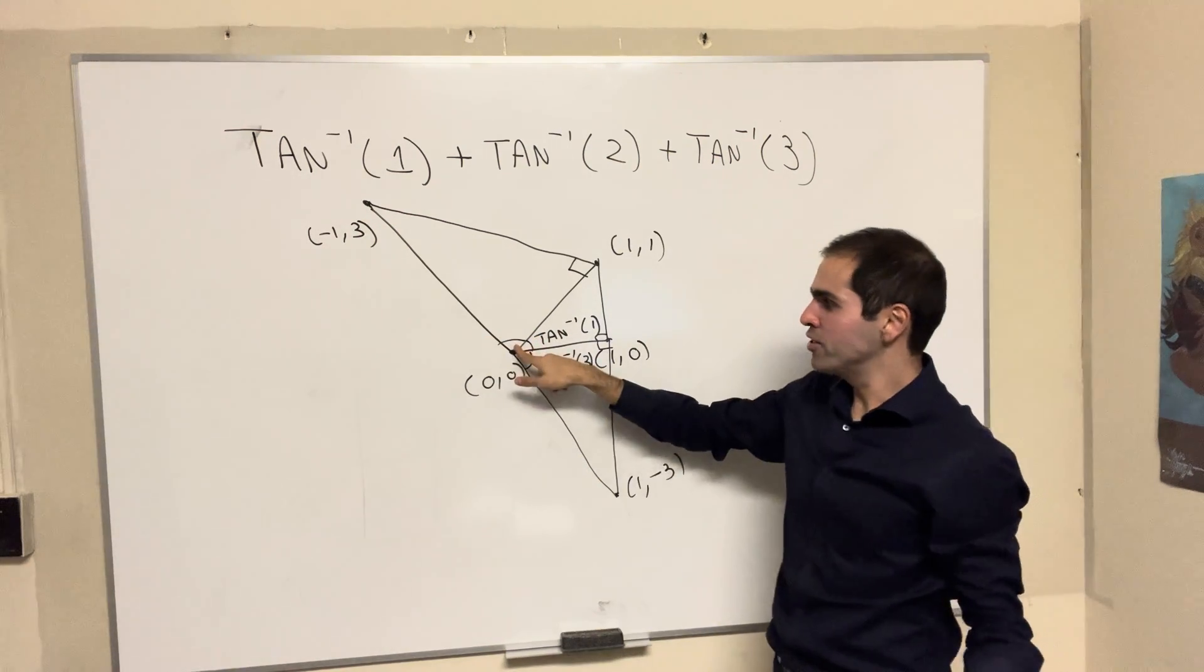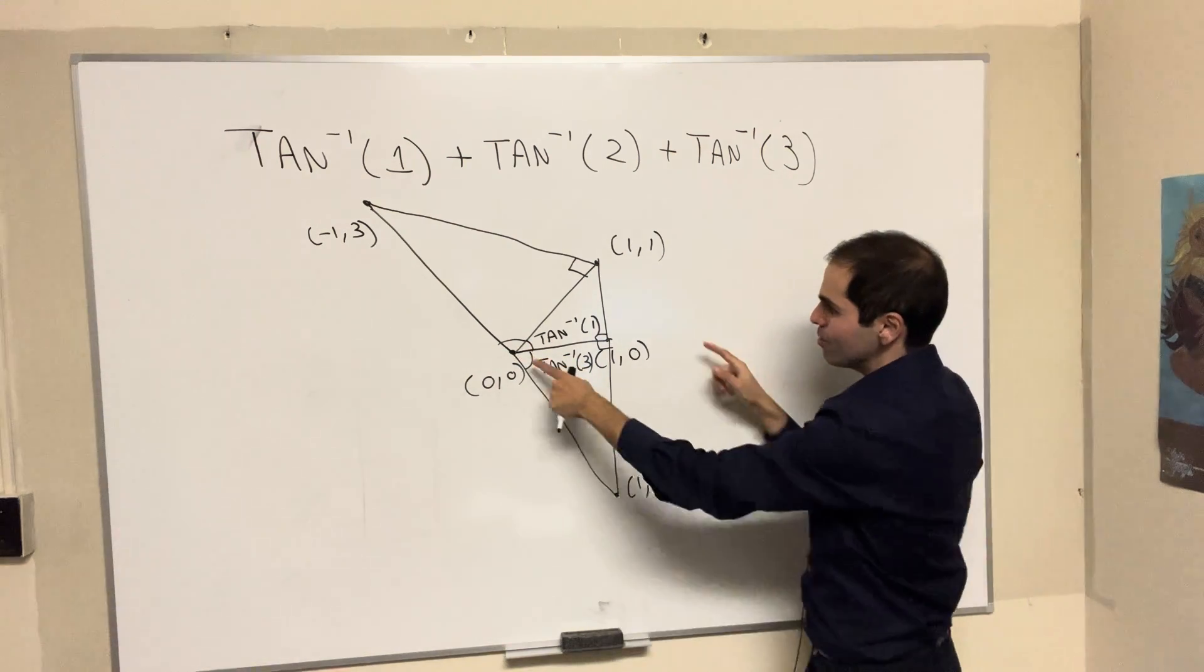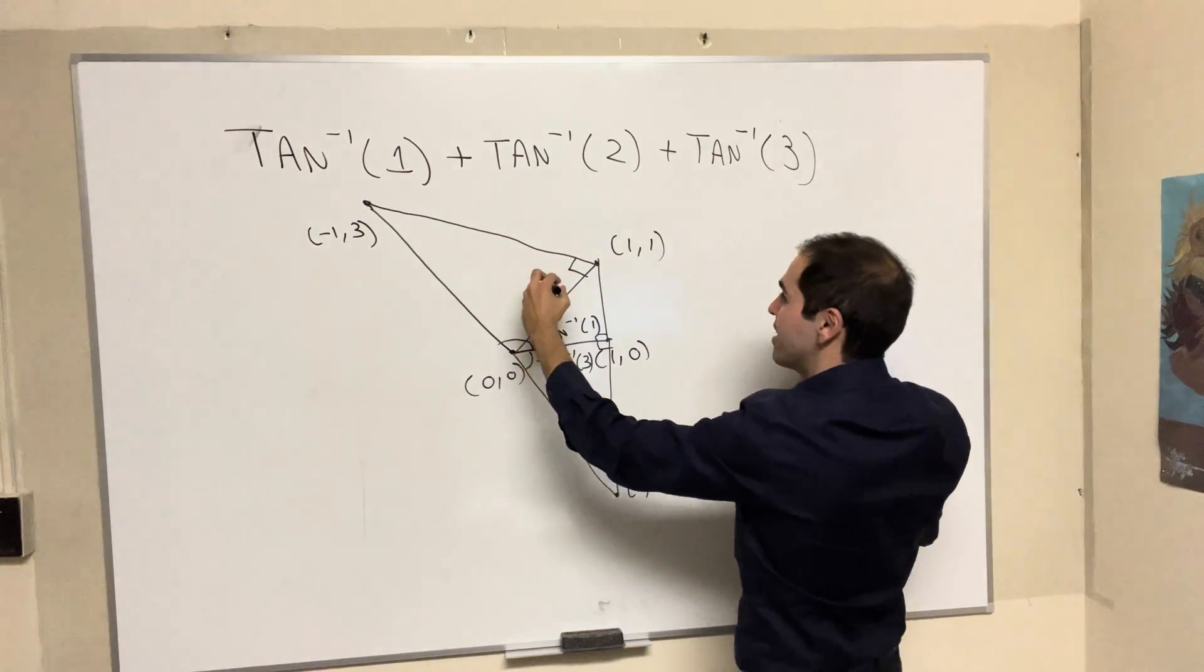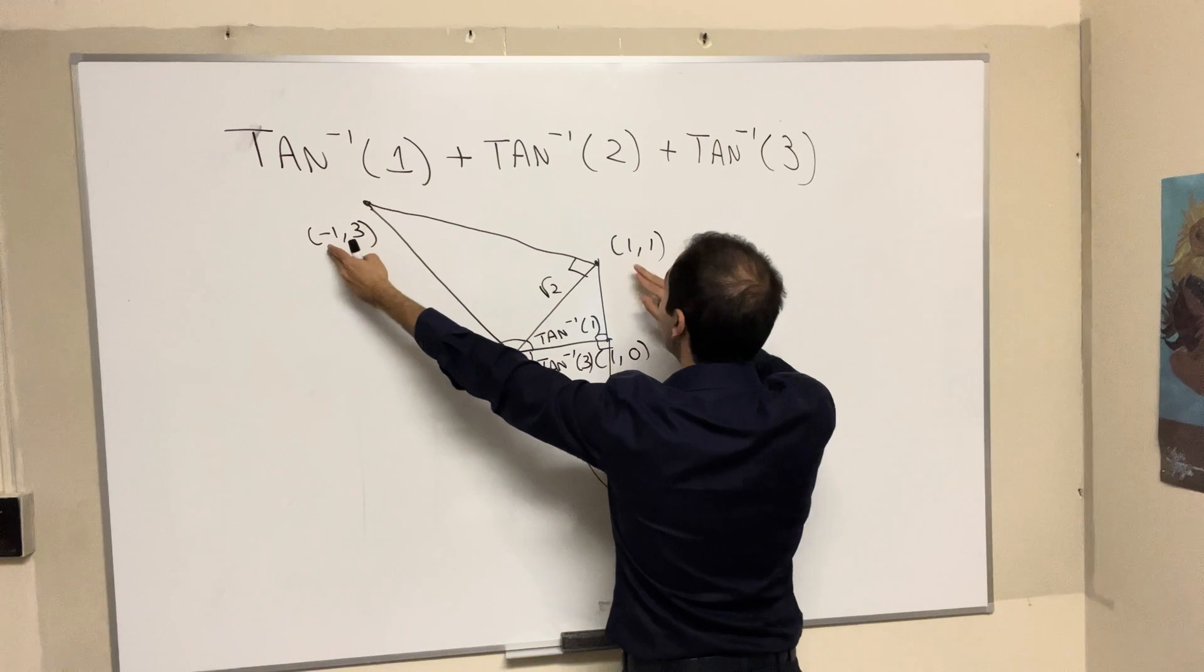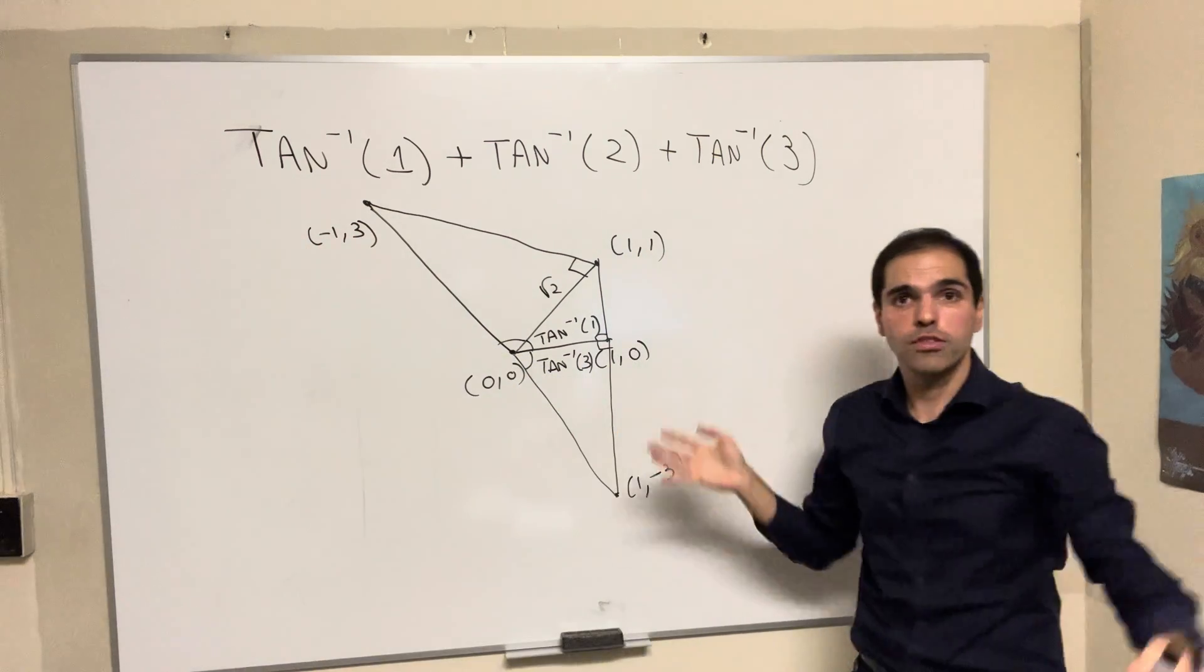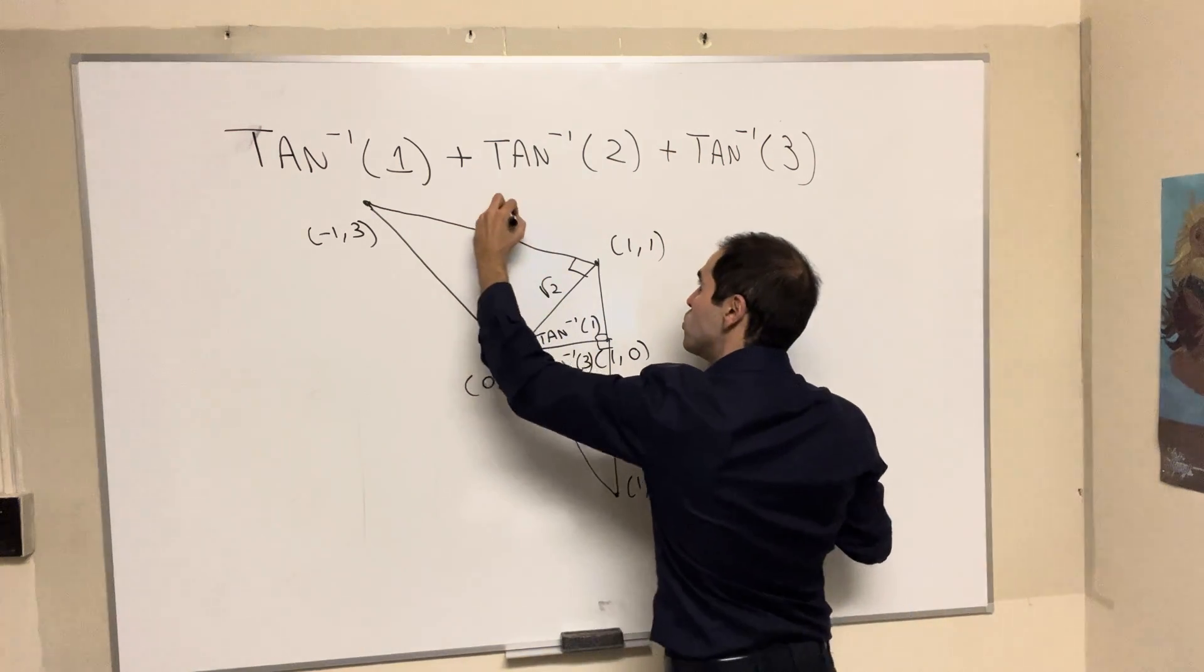And so all that's left to do is calculate the tangent of this angle. But now look, this side, as we mentioned, has length square root of 2. This side, using the Pythagorean theorem, it's square root of 2 squared plus -2 squared, so square root of 8, which is 2 square root of 2.